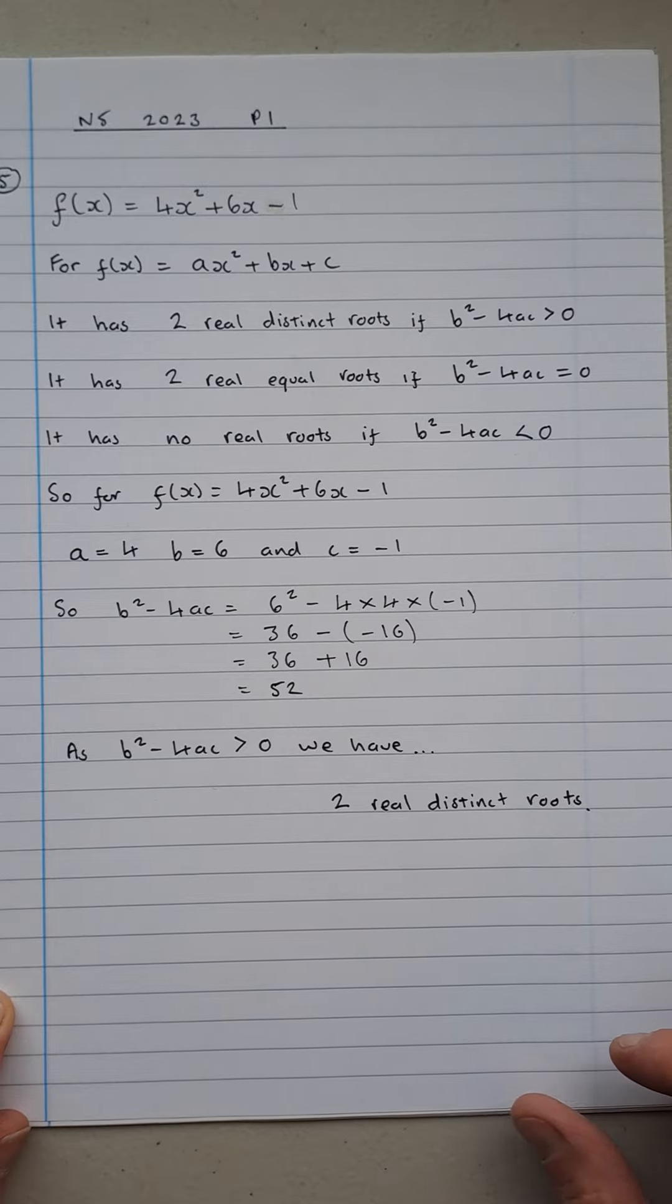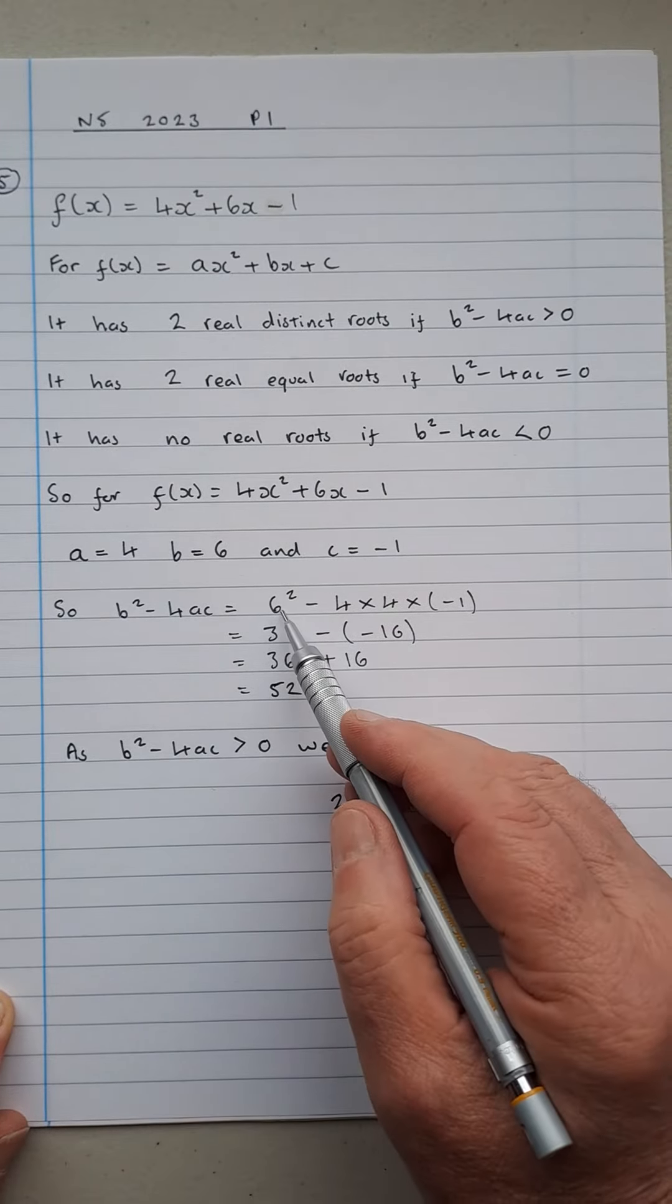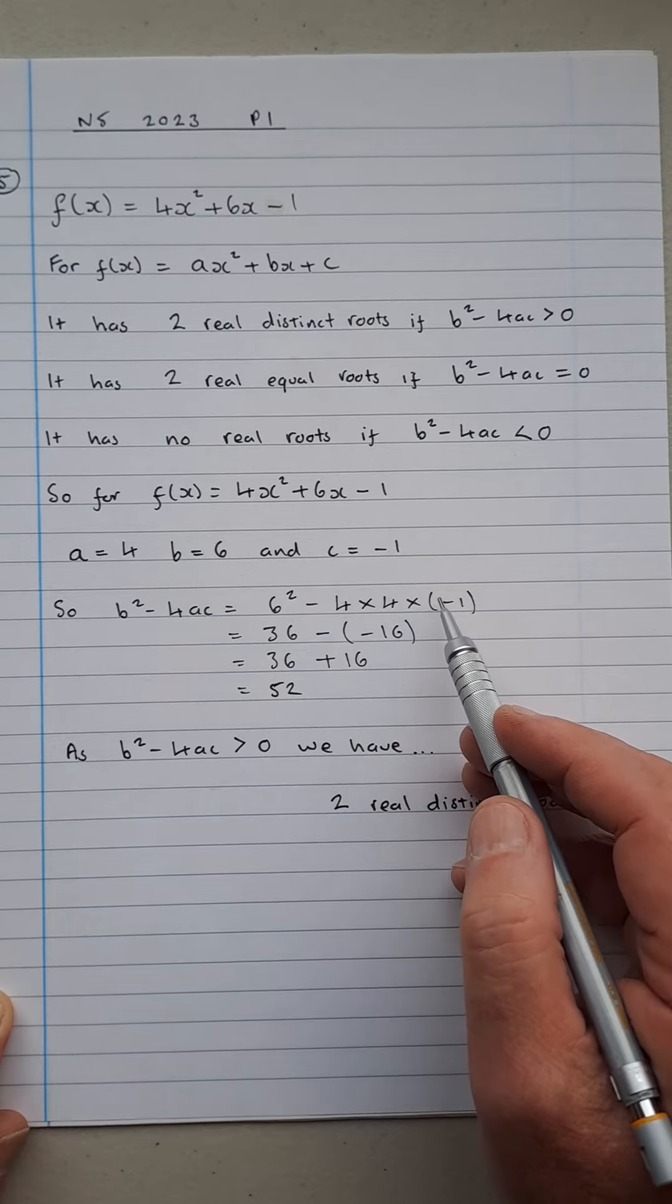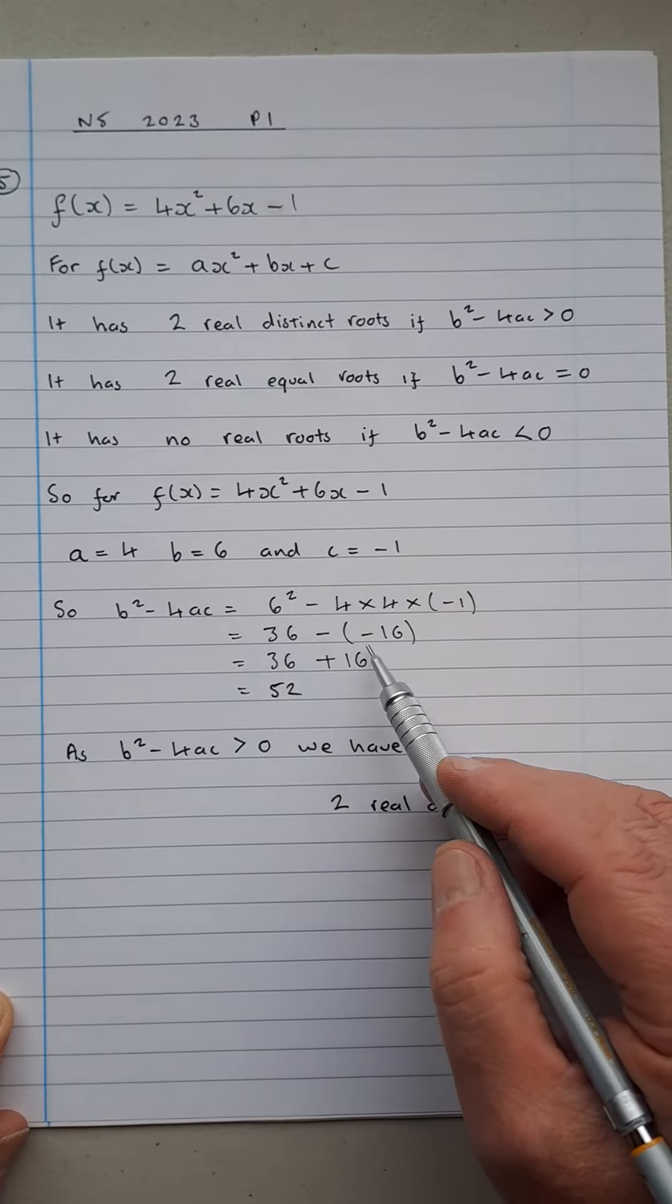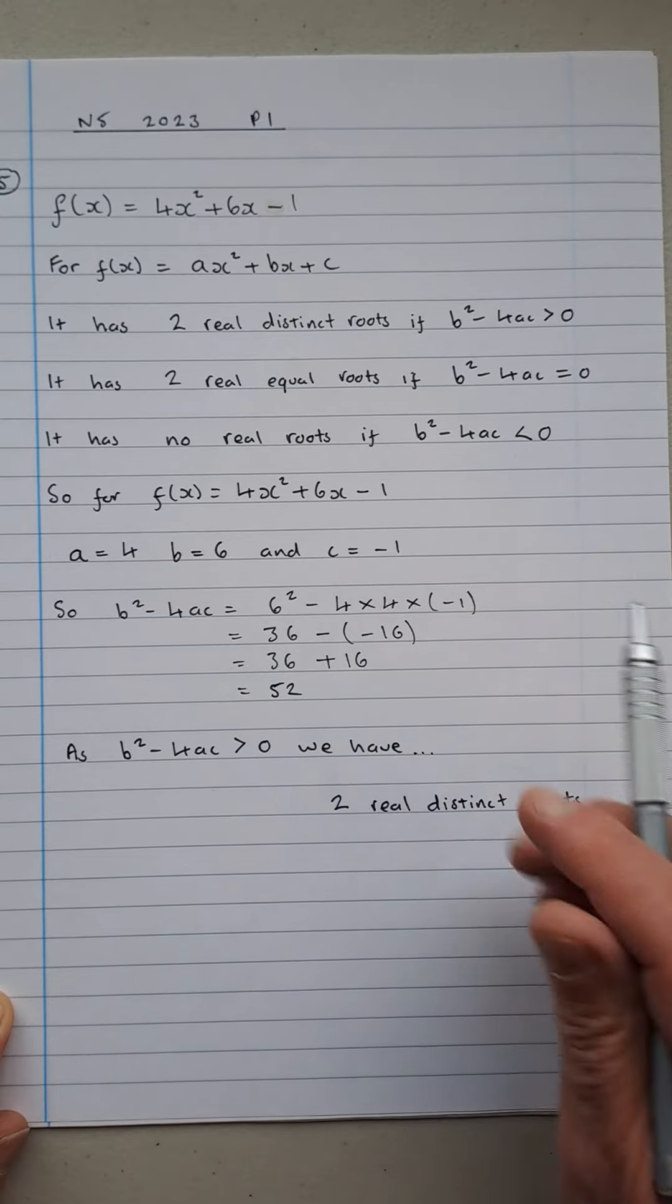So let's work out the discriminant, b² - 4ac. That's 6² - 4 × 4 × (-1), which is 36 - (-16), which ends up being 52.